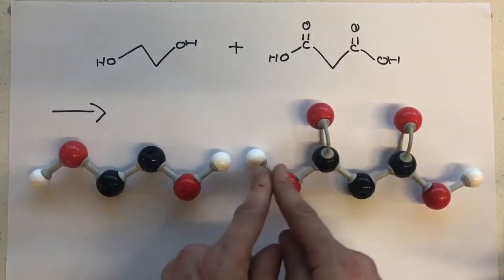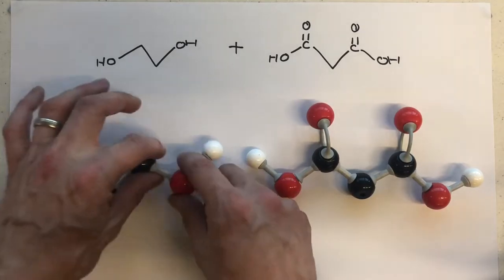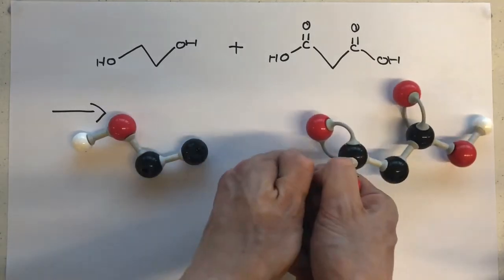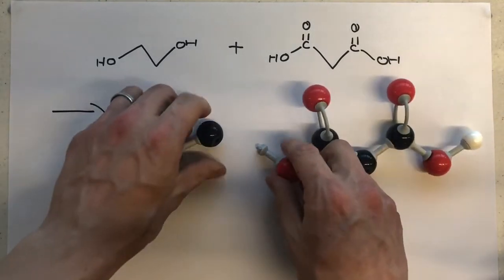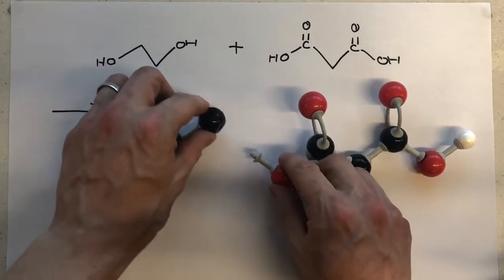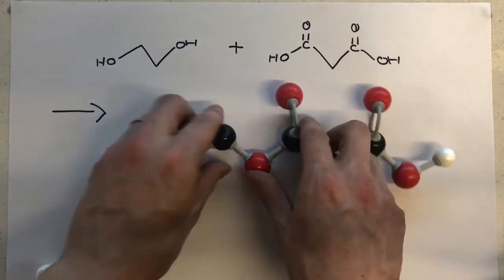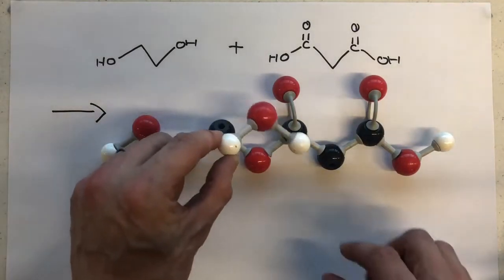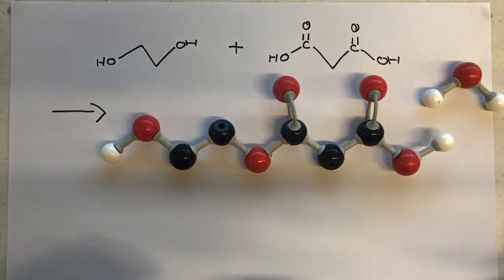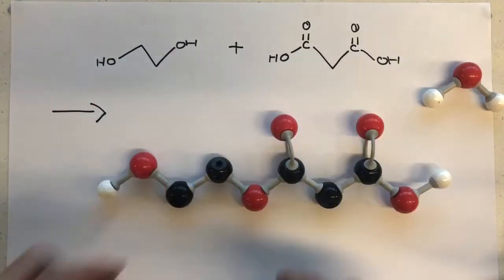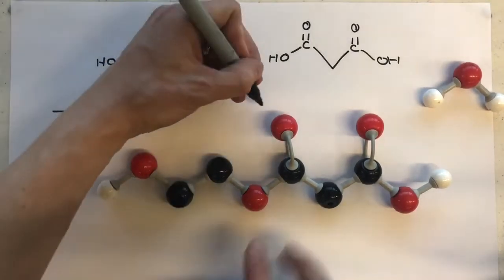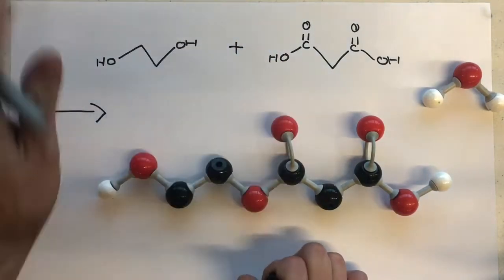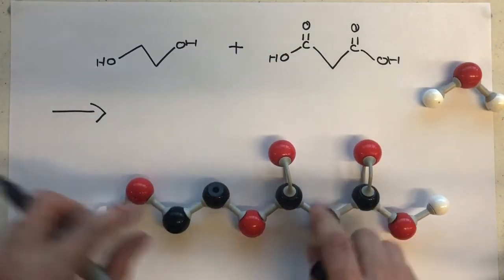I'm going to make the link between them first. I'm going to take off the OH from the alcohol and the H from the carboxylic acid, and then those two are going to clip together and make my ester link. At A-level, don't worry about where exactly the OH comes from — the point is that a molecule of water was kicked out. We don't need to worry about whether the OH comes from one side or the other.